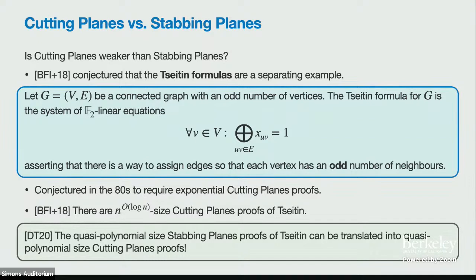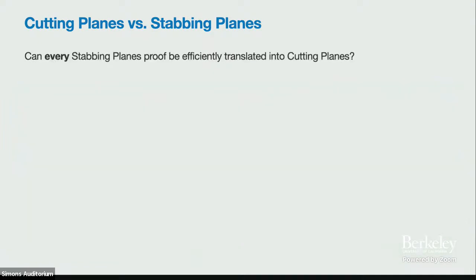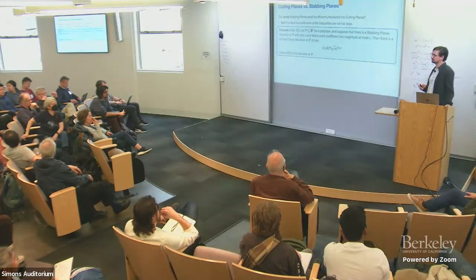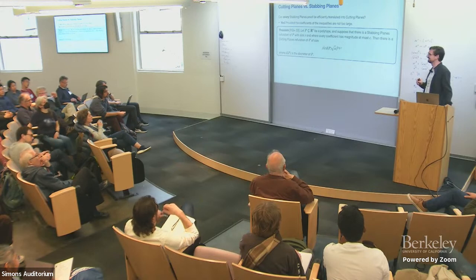Since that approach didn't work, let's switch sides and ask: can every stabbing planes proof be efficiently translated into cutting planes? Can we simulate the branching that branch-and-cut does with cuts at corners? We answer this positively provided the coefficients are not too large — each linear inequality doesn't have massive coefficients. The simulation holds at quasi-polynomial, but it's not known to hold at polynomial. That's a great open question.